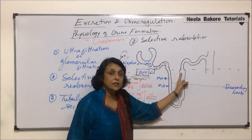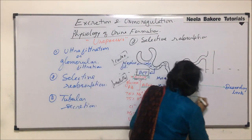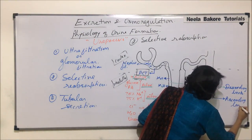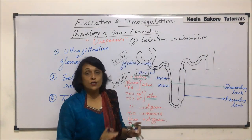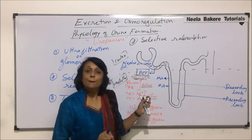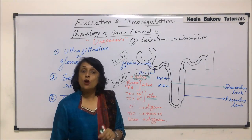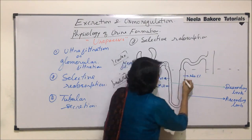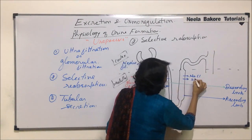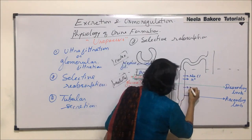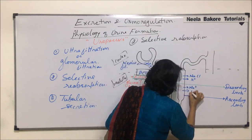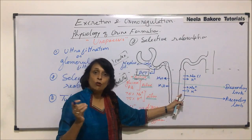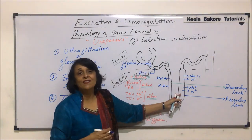The ascending limb is impervious to water — it does not absorb or help in absorption of water. But it helps in absorption of ions like sodium, potassium, and chloride ions. Sodium and potassium ions are the main ions absorbed here, and chloride ions passively diffuse.